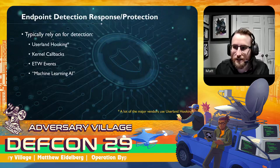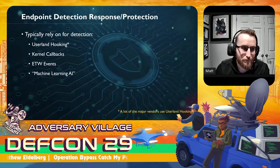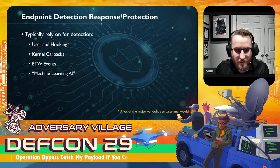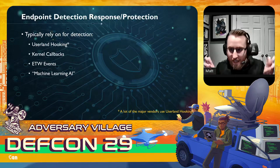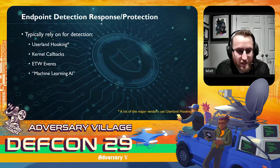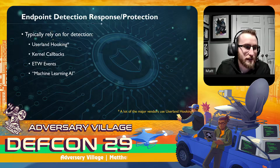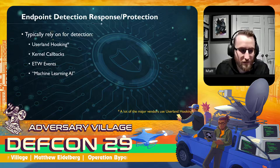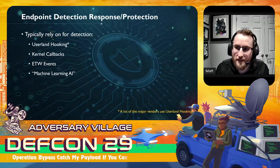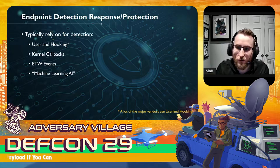How do EDRs actually detect us and subsequently prevent our attacks? They primarily rely on a series of different combinations these days — user land hooking being the most common, kernel callbacks using ETW events, or the moniker of machine learning AI. I use that in quotes because a lot of times when we get down to it, it's usually a signature base or a combination of the three. There are a lot of misconceptions around the machine learning AI claim.